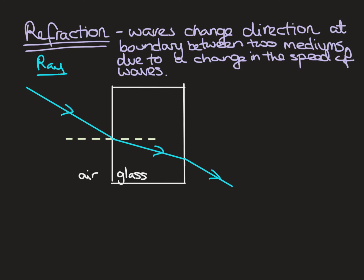If we're drawing the diagram in the context of a whole glass block, we also have the boundary between glass and air on the other side. The refracted ray travels across to the next boundary, where the light wave goes from slow to fast and refracts away from the normal again because the wave has sped up. You'll find that this exit ray is parallel to the original incident ray.